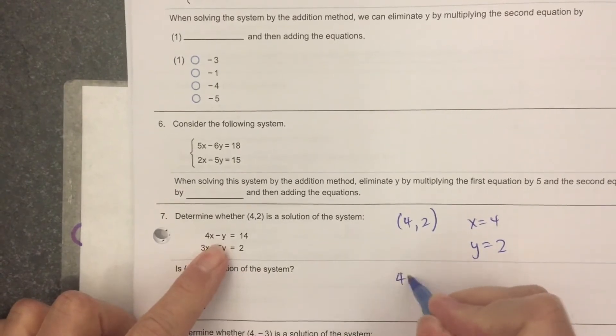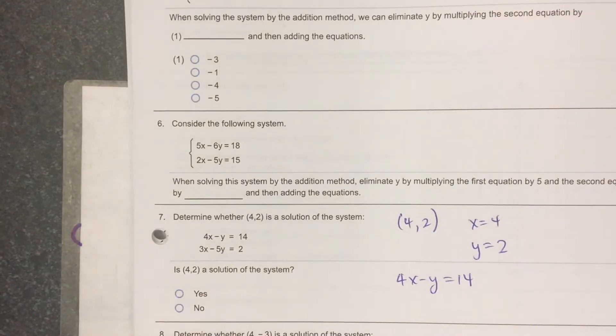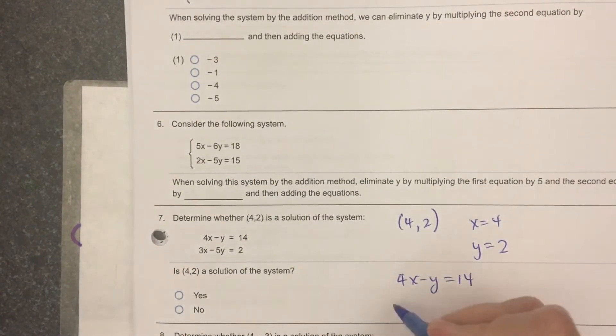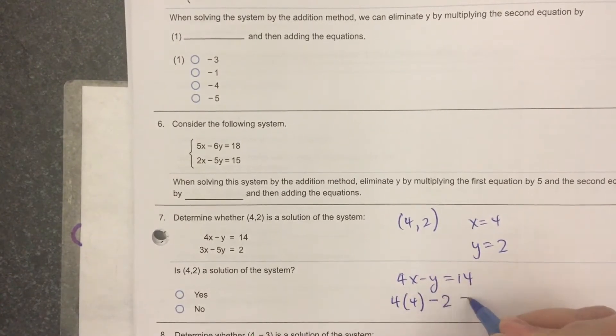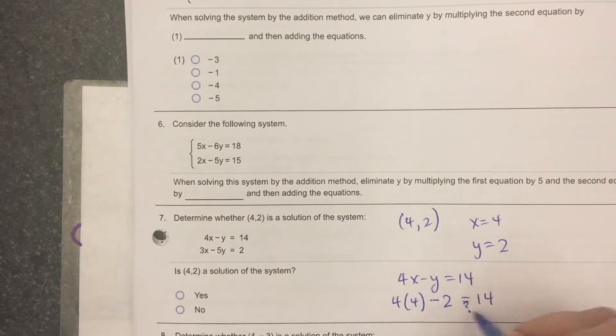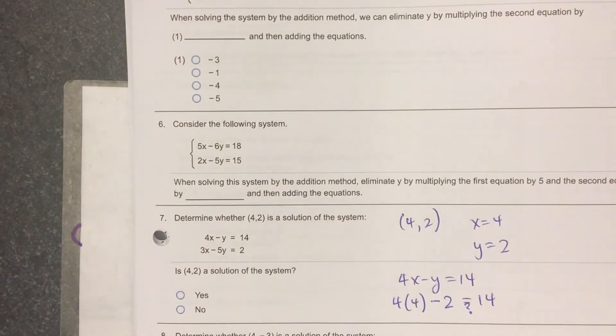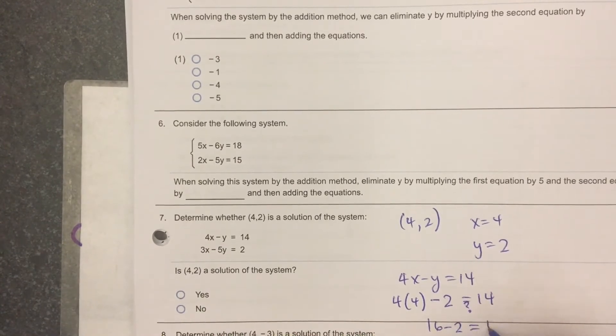I'm going to write the equation 4x minus y equals 14. And then it's going to be 4 times 4, plug in 4 for x, plug in 2 for y equals 14. Now, it's really a question. I'm going to put a question mark above or below my equal sign. We want to know, is that true? 4 times 4 is 16. 16 minus 2, is that 14? 16 minus 2 is 14. 14 equals 14.